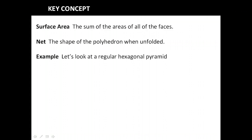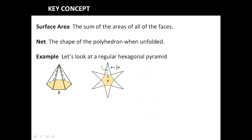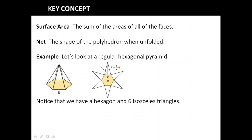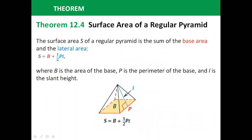Let's look at the regular hexagonal pyramid. If I want to form the net, I would simply cut along each edge of the triangles and fold it out — and that's what you would end up with. To find each of those triangles, the area is one-half the length of the base B times the lateral height, which is the height of that triangle. Notice we have a hexagon and six isosceles triangles.